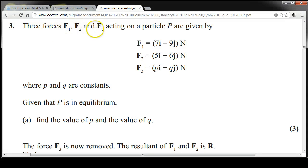Three forces F1, F2 and F3, acting on a particle P, are given by F1 equals 7i minus 9j, F2 is equal to 5i plus 6j, and F3 equals pi plus qj, where p and q are constants. Given that P is in equilibrium, find the value of p and the value of q.